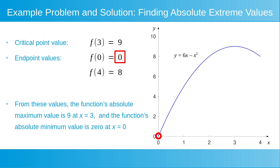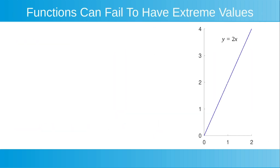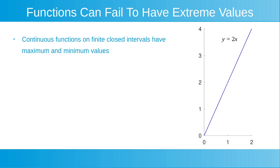This concludes our example problem and solution. We'll now learn how functions can fail to have extreme values. Continuous functions on finite closed intervals have maximum and minimum values.